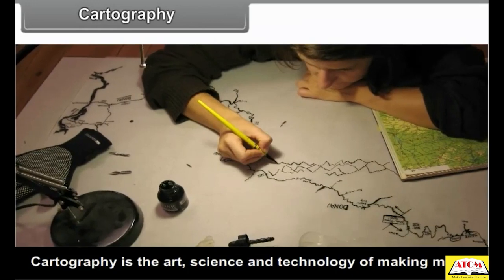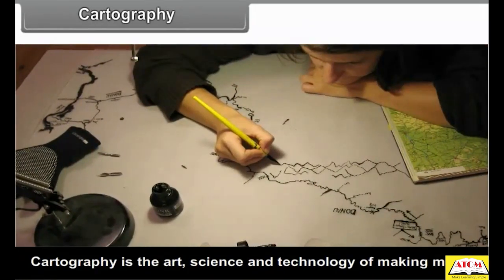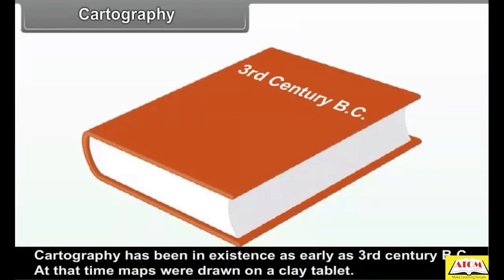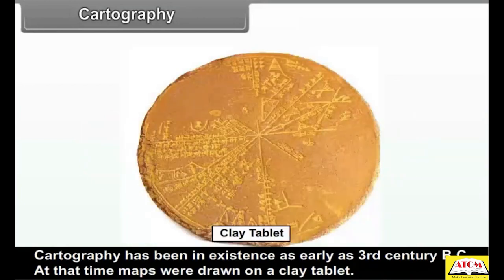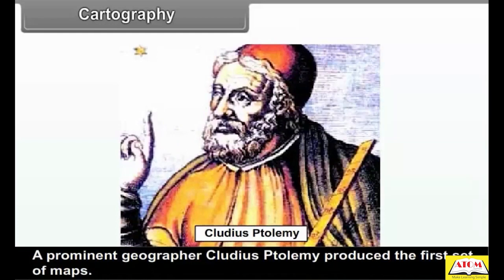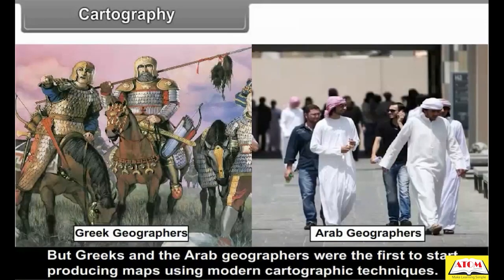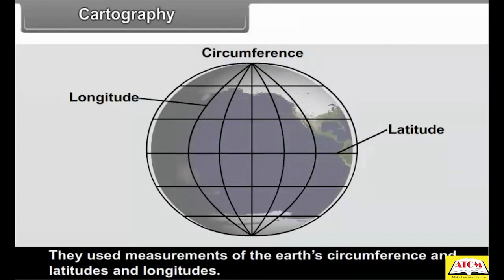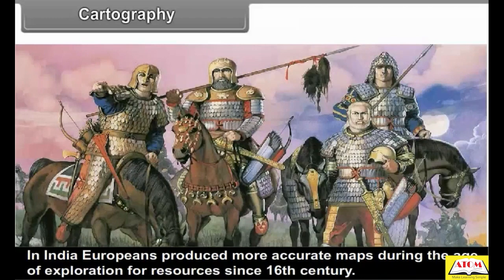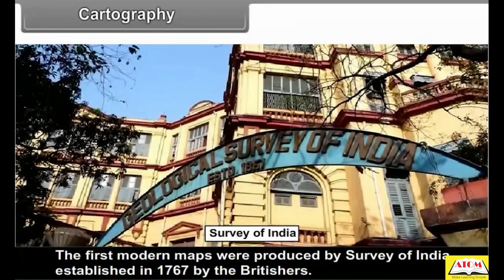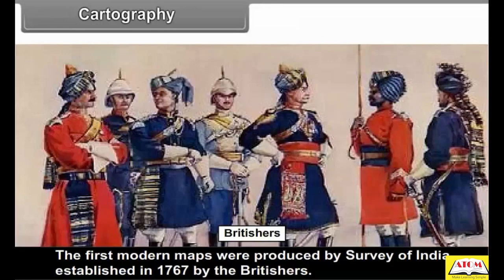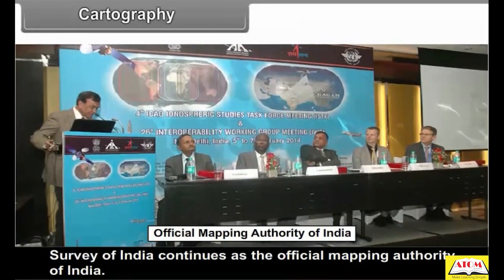Cartography is the art, science and technology of making maps. Cartography has been in existence as early as the 3rd century BC. At that time, maps were drawn on a clay tablet. A prominent geographer, Claudius Ptolemy, produced the first set of maps. Greeks and Arab geographers were the first to start producing maps using modern cartographic techniques, using measurements of the earth's circumference and latitudes and longitudes. In India, Europeans produced more accurate maps during the age of exploration since the 16th century. The first modern maps were produced by the Survey of India, established in 1767 by the British. Survey of India continues as the official mapping authority of India.